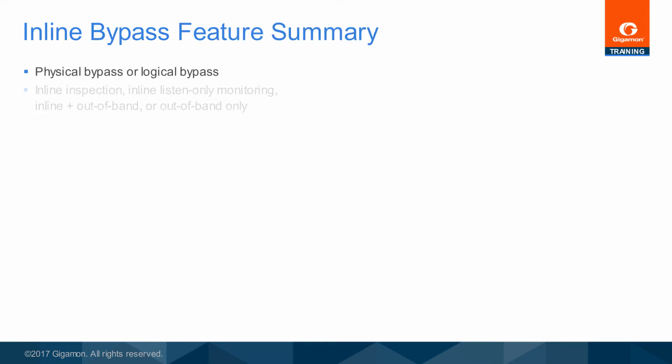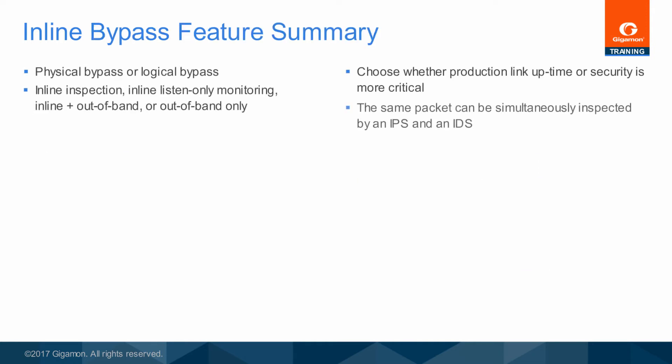The range of choices available from Gigamon inline bypass switch are hard to grasp at a glance. Here is a quick overview of most of the major aspects. All of the features are available whether they are configured for an available pair of 1, 10, 40, or 100 Gigabit ports, or 1 or 10 Gigabit ports when configured on the custom hardware intended to ensure that the production link never goes down.